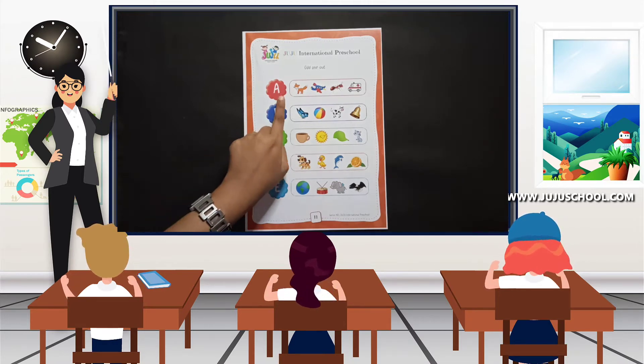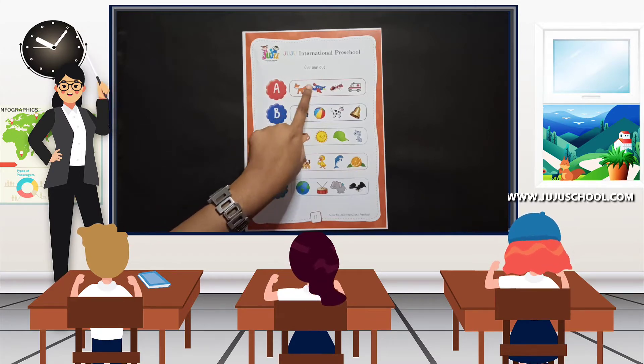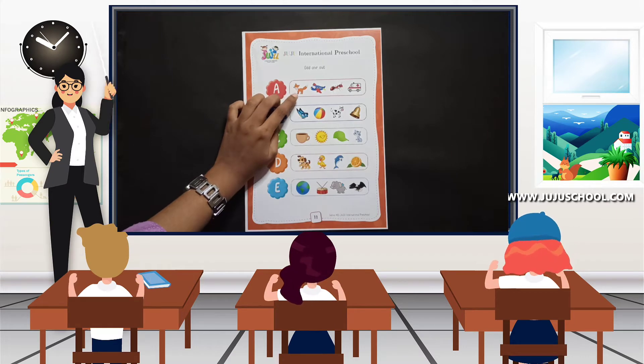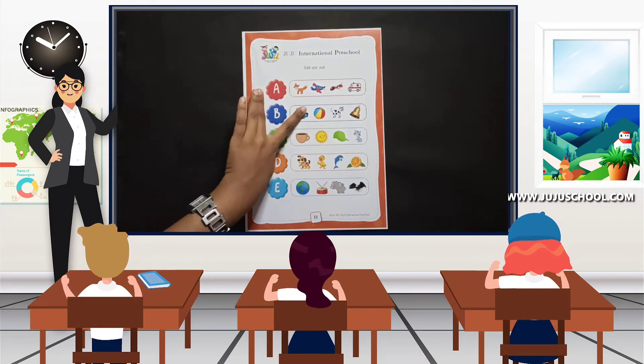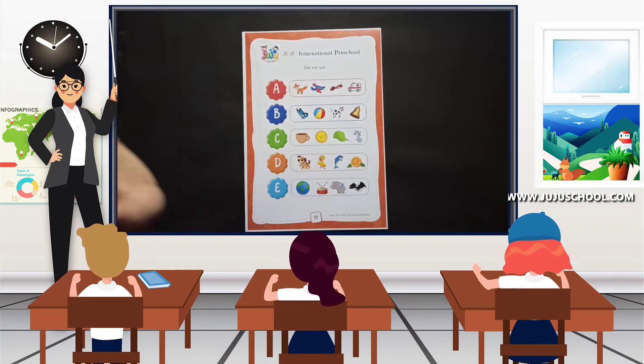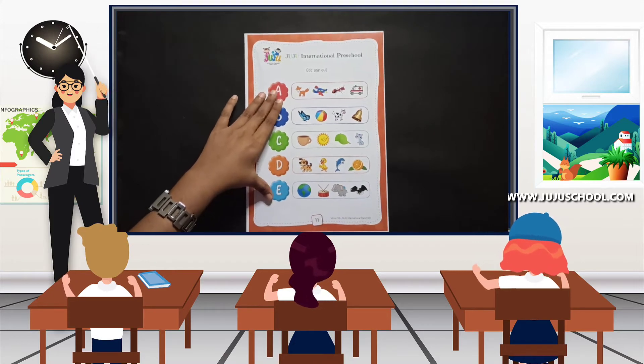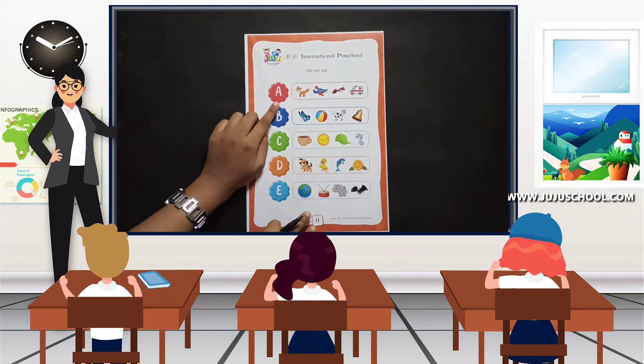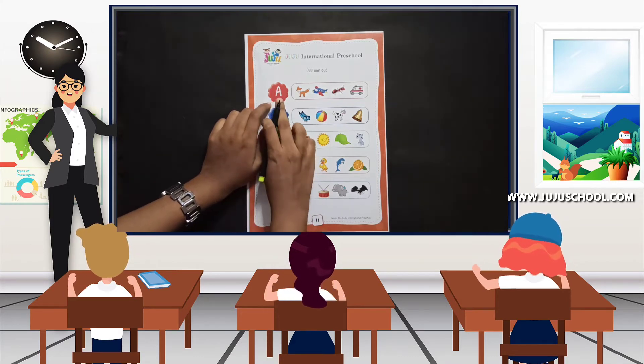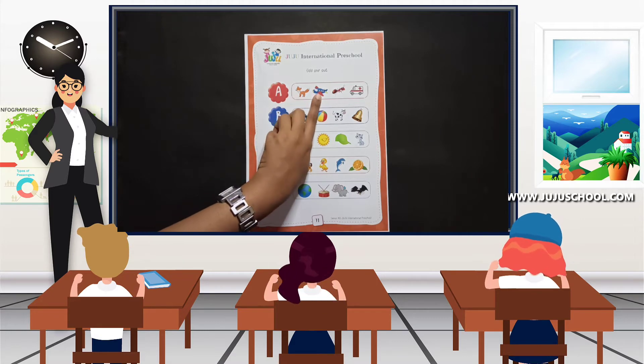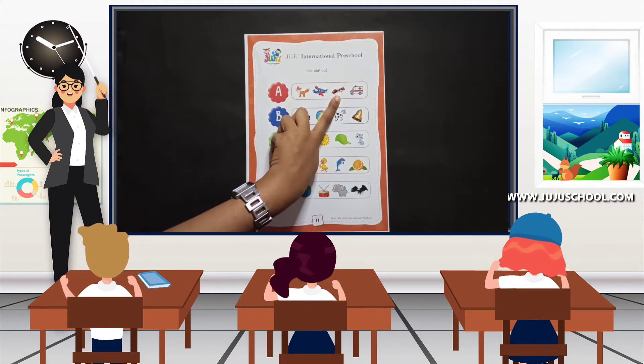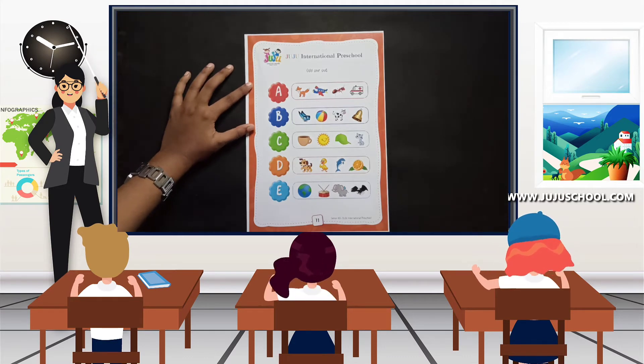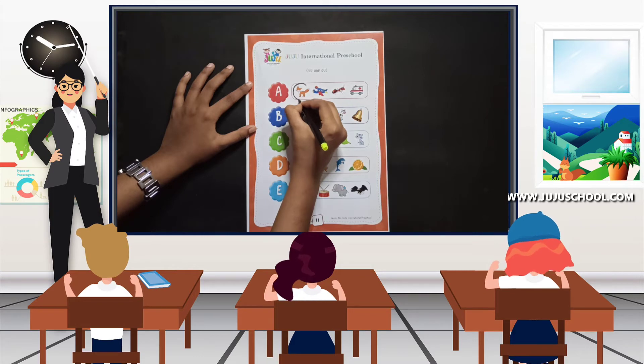For example, A for airplane, A for ant, A for ambulance. So what is this? It's Fox. Does it come under A? Is it A for Fox? No, right. So this is the odd one out. Likewise, we are going to complete this activity. Let's get started. Take a pencil and go. We'll just make a read and then we'll continue. A for airplane, A for ant, A for ambulance. So which is the odd one out here? That's right, it's the Fox. So we are going to circle the Fox.